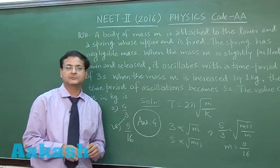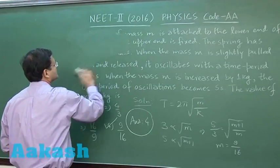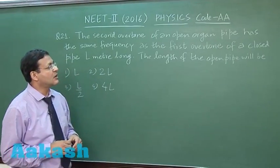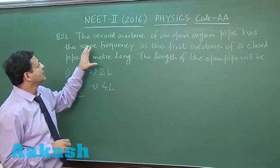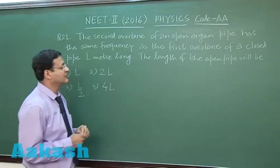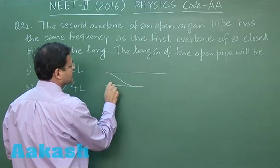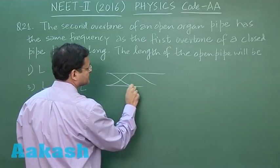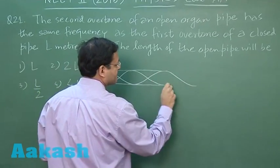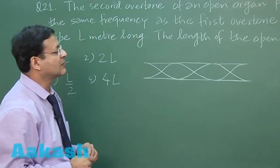Now let us switch over to question number 21. This question is based on sound waves, and that too organ pipes resonance. The second overtone of an open organ pipe - if you have an open organ pipe then fundamental is like this, first overtone means one more quarter wavelength, and this is the shape of second overtone.